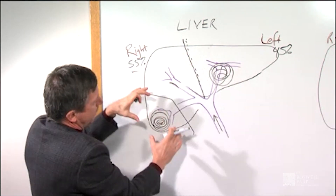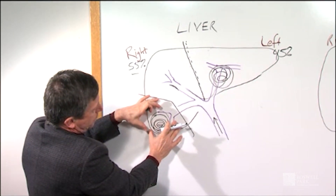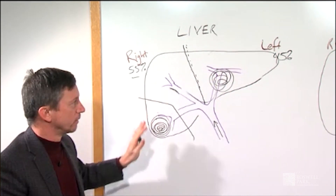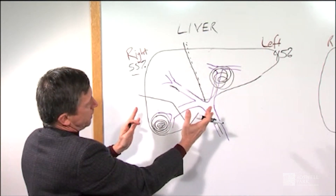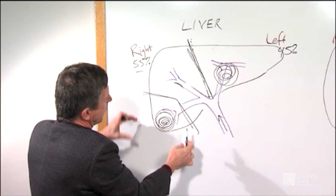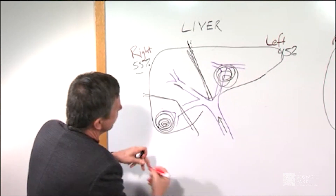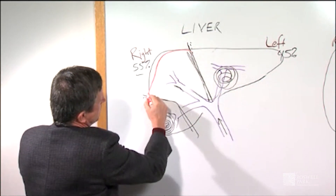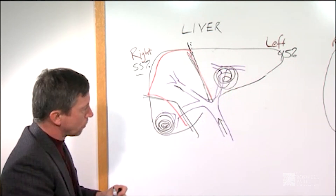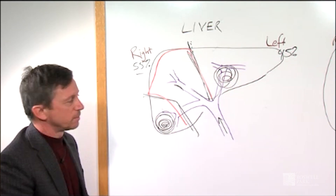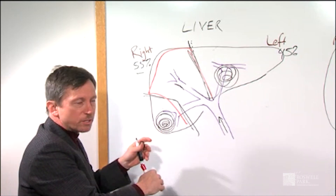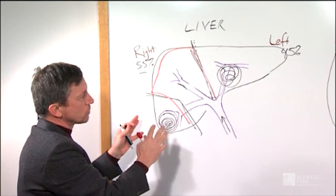If the tumor is more central in the middle of the liver, you may have to remove a larger part. If it's more peripheral, you would remove just that segment. There will also be cases where you have tumors on both sides of the liver, where we may remove multiple areas while saving a portion that will grow back. All of these are different options depending on the number and size of tumors and the health of the underlying liver.